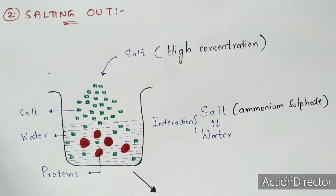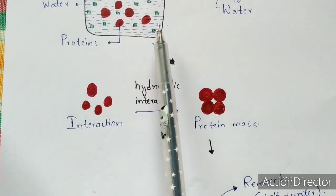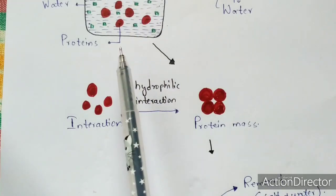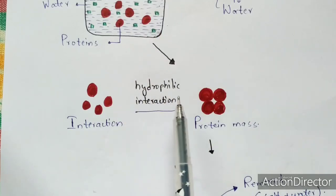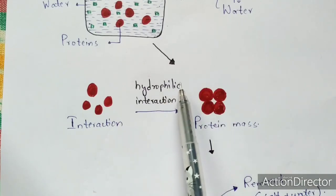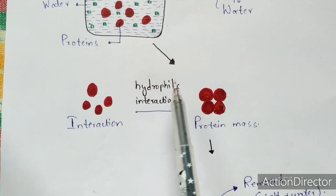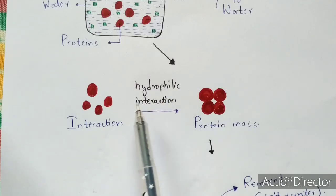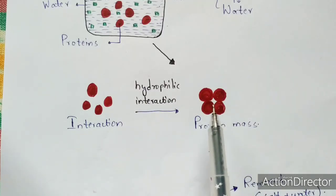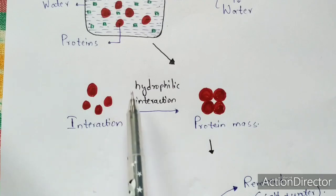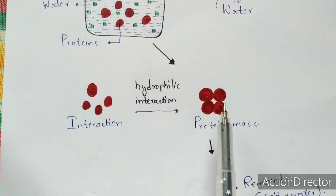As the salt interacts with the water, the proteins are left alone. Then the interactions of proteins occur in such a way that a protein mass is formed. Hydrophilic interactions occur here too, because the hydrophilic groups are exposed towards the environment. All the proteins interact towards each other, forming a protein mass.